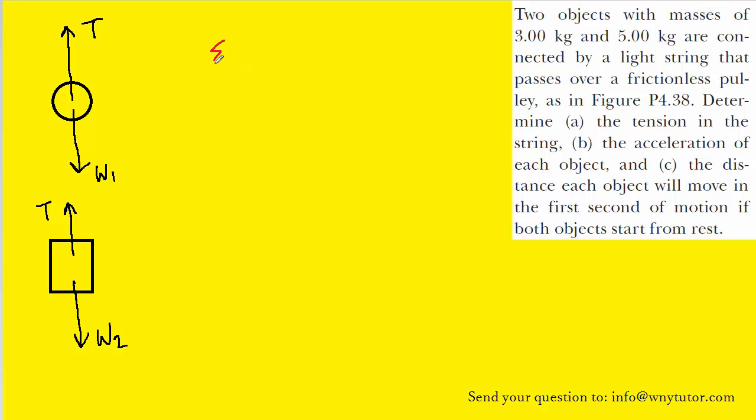Now, Newton's second law says that the sum of the forces acting on an object is equal to the product of the object's mass and its acceleration. We'll notice in both cases, in both free body diagrams, there are forces acting only in the vertical direction or the Y direction. So we really need to focus our analysis on the Y direction only.